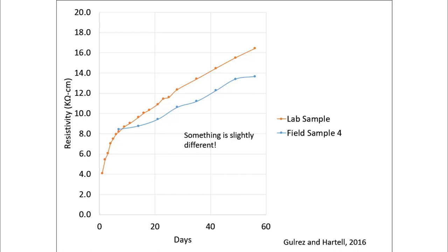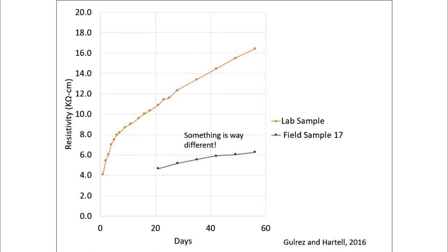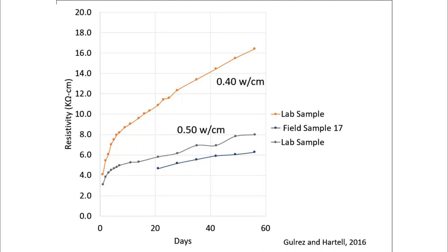And then I get to field sample 17 and something is not right. Something went wrong. So, what happened here? Well, you'll find out the mixture at the top was a 0.40 water-cement ratio. You'll find out the mixture at the bottom was a 0.50 water-cement ratio. Those were both done in the lab.